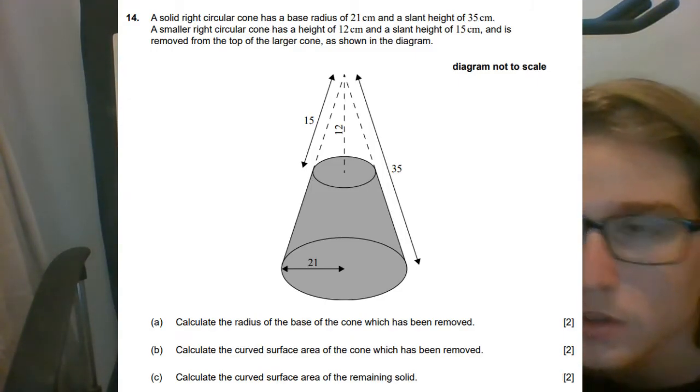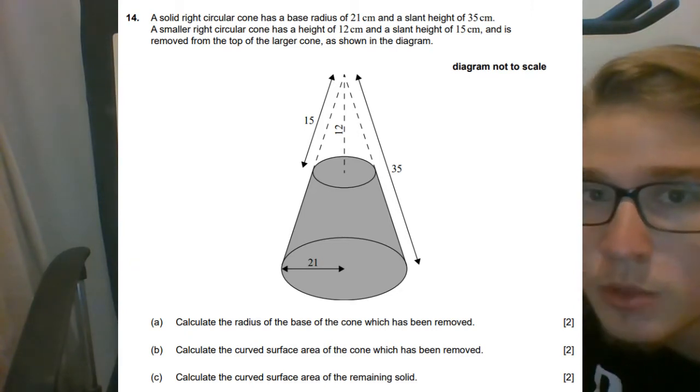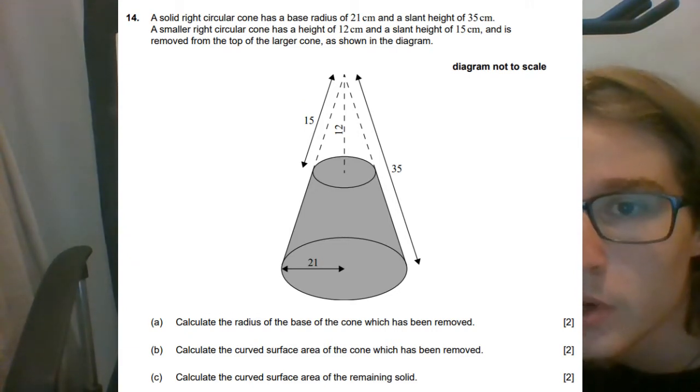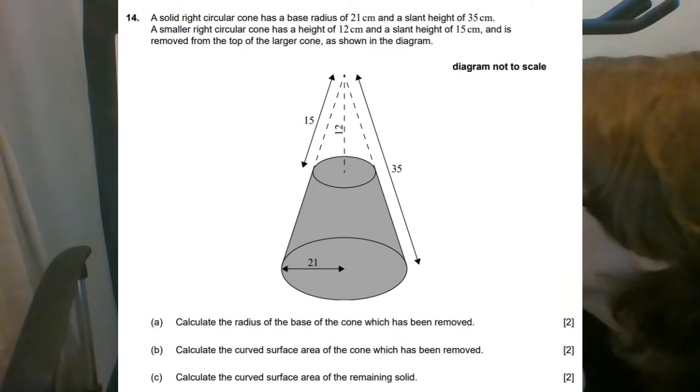The problem gives us this diagram right here and tells us that we have a solid right circular cone with a base radius of 21 centimeters, a slant height of 35, and a smaller right circular cone on top with a height of 12 and a slant height of 15.